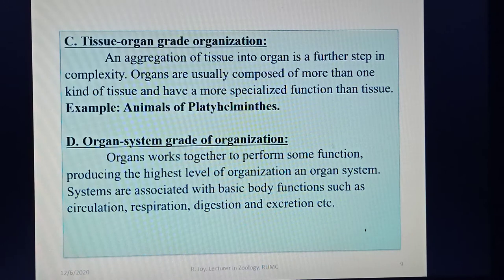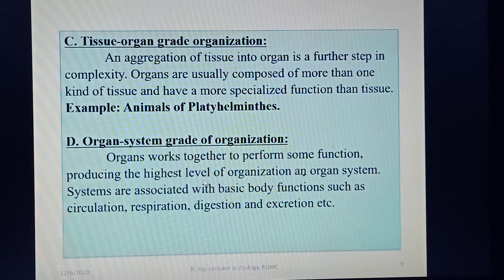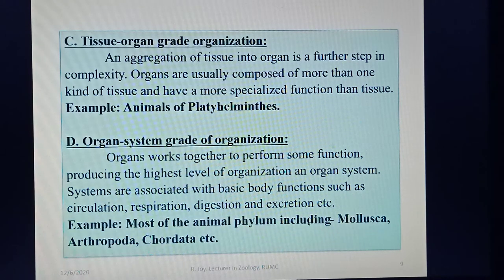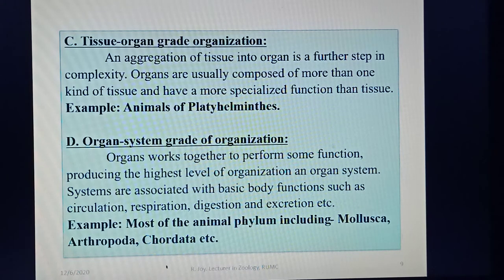The next classification is organ-system grade of organization, where organs work together to perform functions, producing the highest level of organization. Systems are associated with basic body functions such as circulation, respiration, digestion, and excretion. The example of organ-system grade of organization is most animal phyla, including Mollusca, Arthropoda, and Chordata.